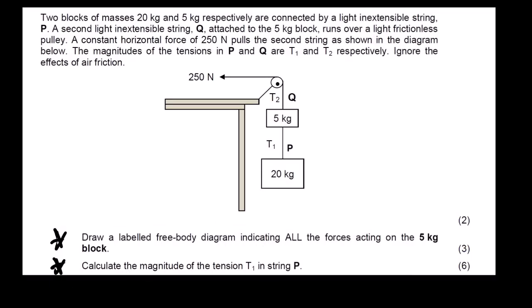Our first question is based on this question paper. The scenario says two blocks of masses 20 kg and 5 kg respectively are connected by a light inextensible string P. A second light inextensible string Q attached to the 5 kg block runs over a light frictionless pulley. A constant horizontal force of 250 Newtons pulls the second string as shown in the diagram below. The magnitudes of tensions in P and Q are T1 and T2 respectively. Ignore the effects of friction.